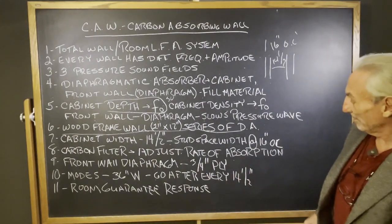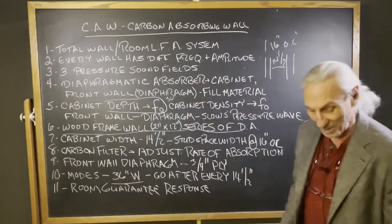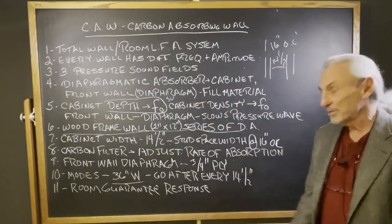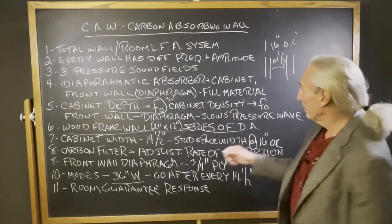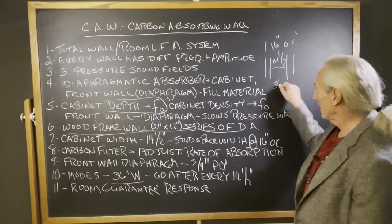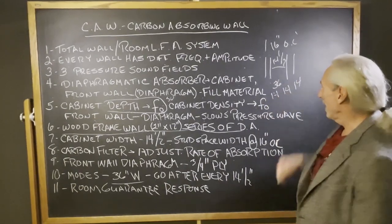We know from our data and stuff that we work with, with pressure, that most room modes, 30, 40, 50 cycle modes, they're about 3 feet wide. So if we go after 3 feet, 36 inches, every 14, look what we can do to that mode.